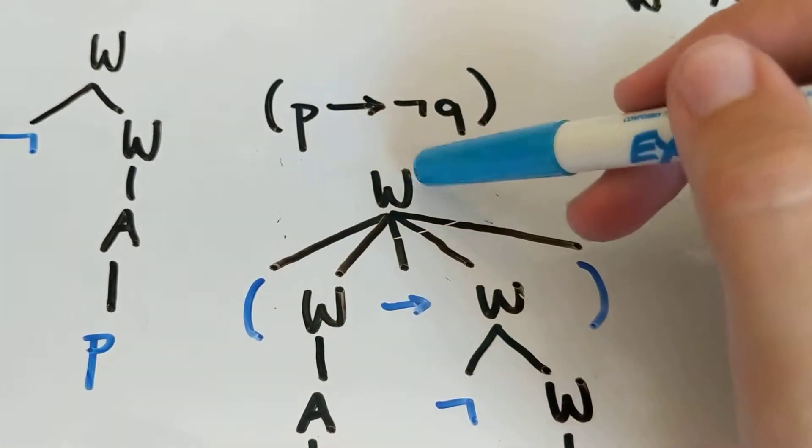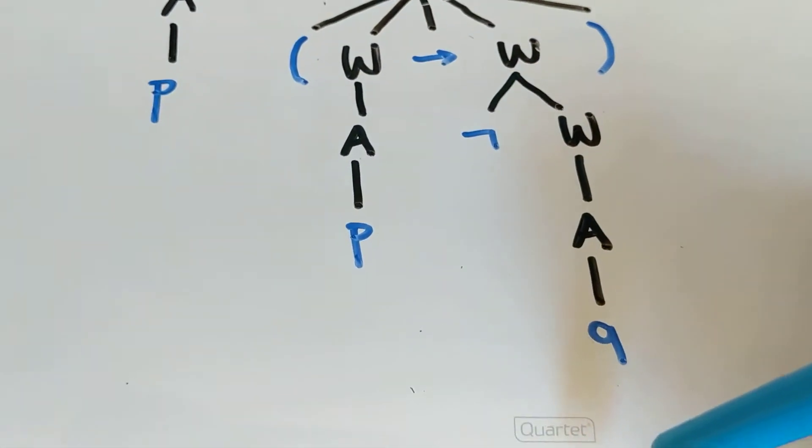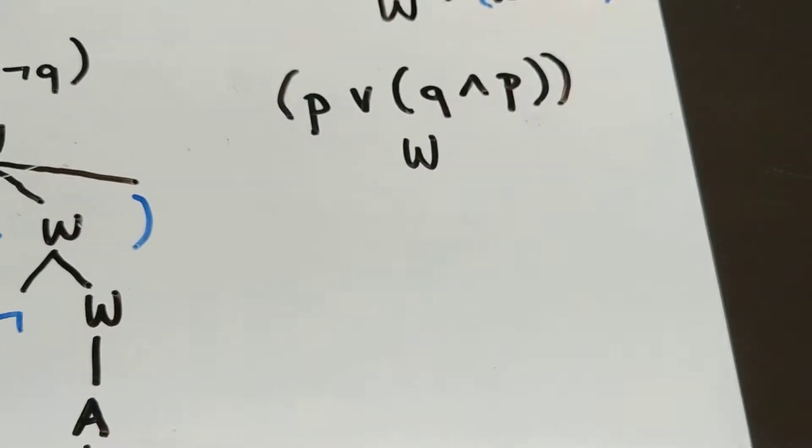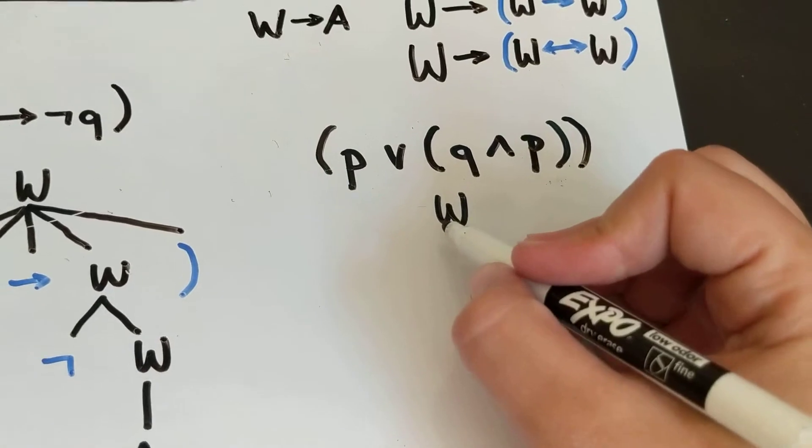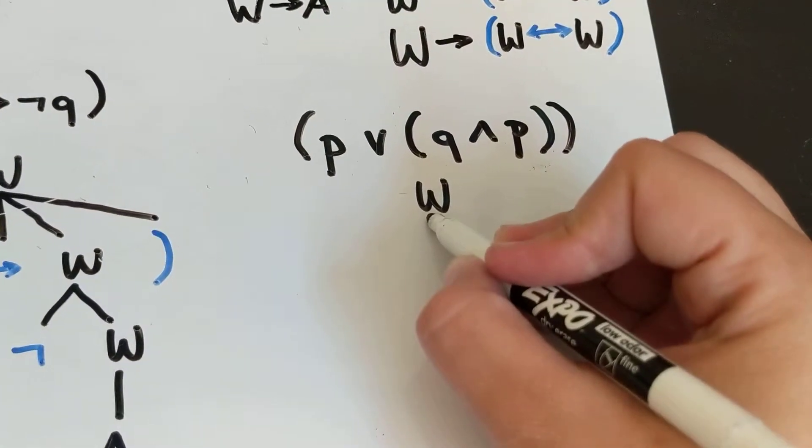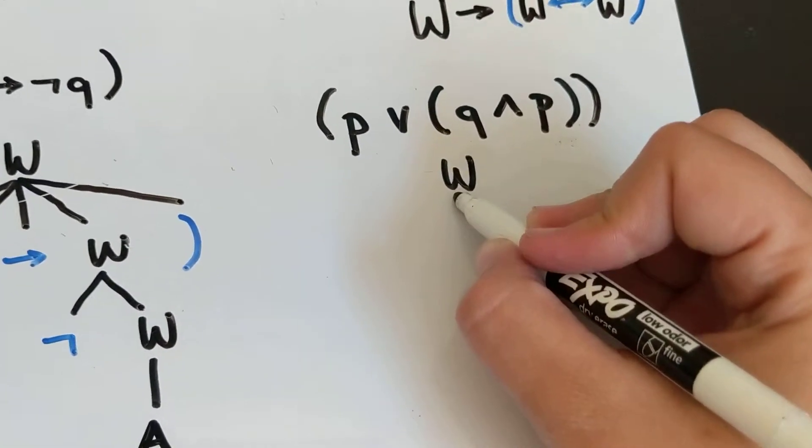We might also have started at the top and gone down like that. So let's just do one more example where we start at the top and go down. This would be fairly easy for all of you because you've done these before. Essentially, you just haven't expressed them this way.